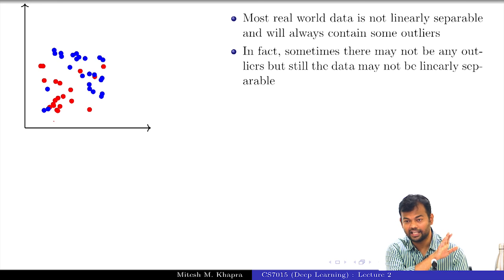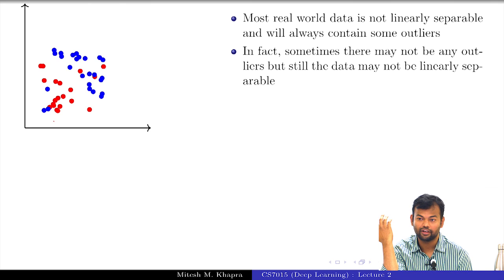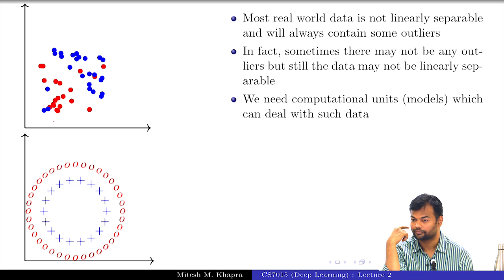In fact, there could be a clear case where there are no outliers, but still you cannot find a line such that you separate the positive from the negative. Can you think of such an example? Good right.